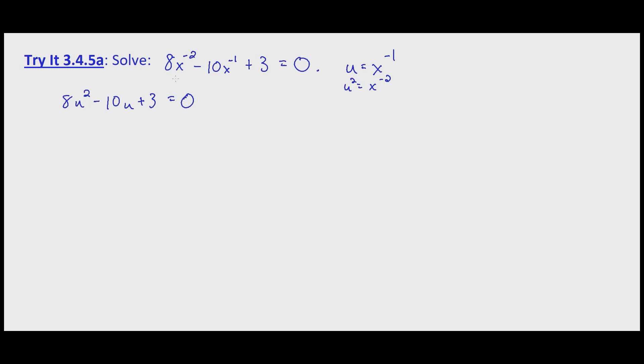It might not be obvious right off the bat that this will factor, but we have a leading coefficient and a constant that it's not too complicated to look at the individual factors. By trial and error we would easily figure out that this will factor to 2u minus 1 times 4u minus 3 equals 0. If you multiply that back through you'll see that it's 8u squared minus 10u plus 3 equals 0.